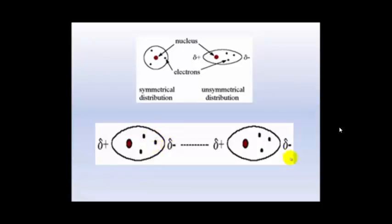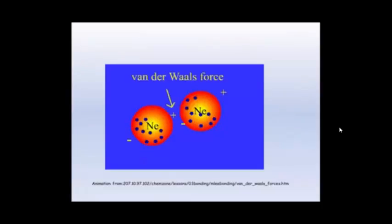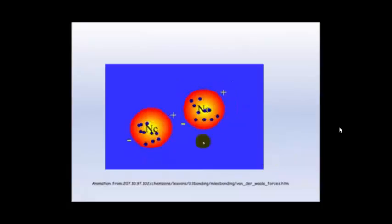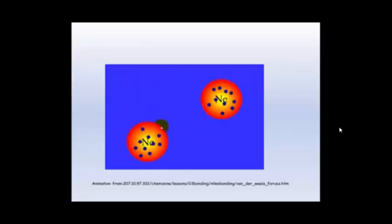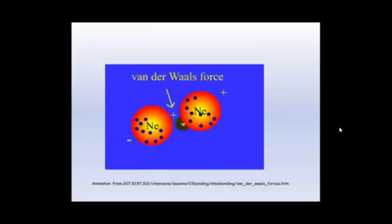And that will allow it to attract to another one. And here we have neon. So even neon can attract to each other with van der Waals forces because you get this instantaneous dipole when there's an uneven distribution here of electrons.